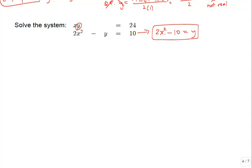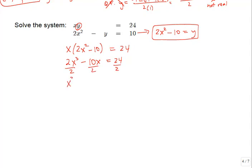Now we substitute 2x squared minus 10 for y in the top equation. That gives x times the quantity 2x squared minus 10 equals 24. Distributing x: 2x cubed minus 10x equals 24. Since all coefficients are even, we divide by 2 to get x cubed minus 5x equals 12. Setting equal to zero by subtracting 12 gives x cubed minus 5x minus 12 equals 0.